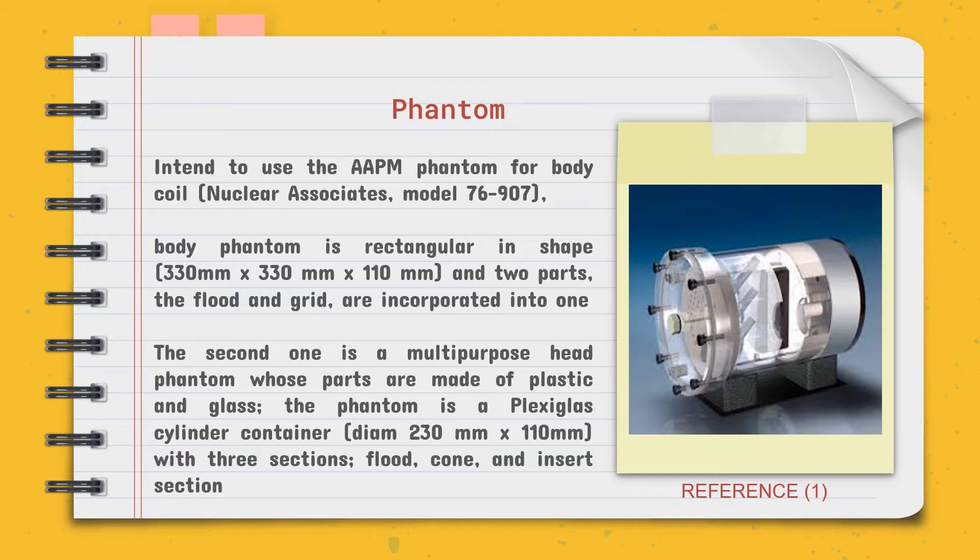The phantom used is the AAPM phantom for the body coil, model 76. The body phantom contains two parts. The first is a rectangular shape with dimensions of 330 mm by 330 mm by 110 mm, consisting of two parts: the float and the grid.